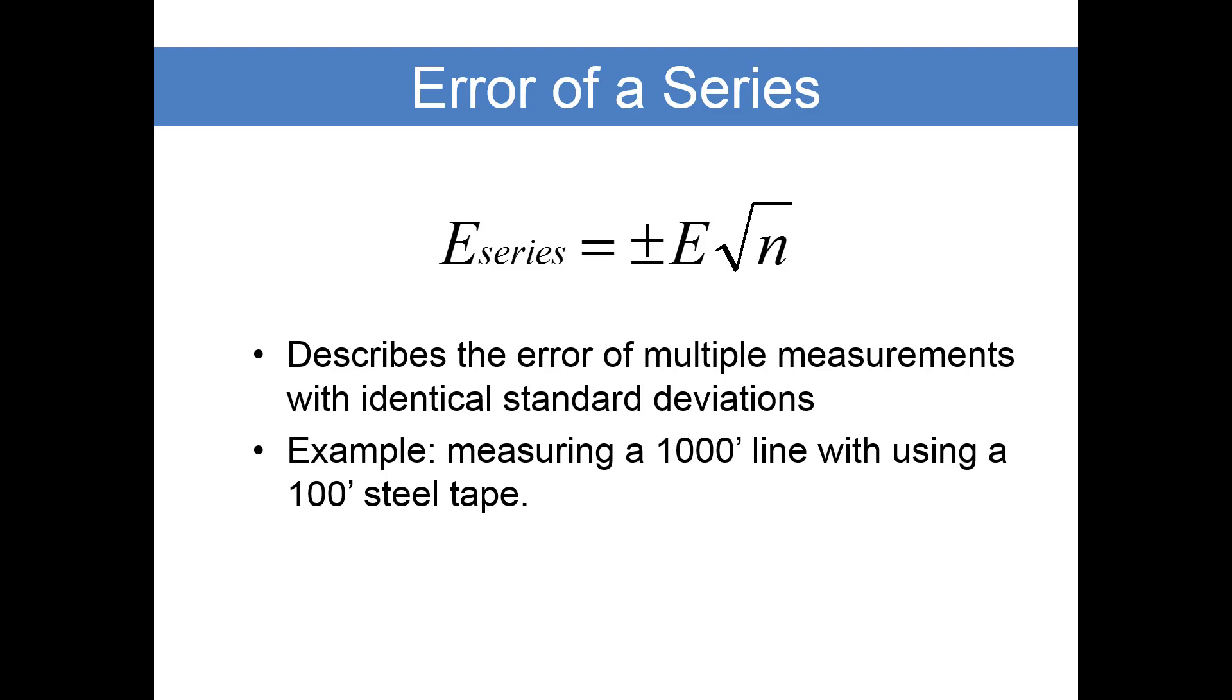Every time you lay down that tape, if you're using good methods, you should have the same error, the same accumulation of error per 100-foot tape length. The error of a series is equal to plus or minus the error times the square root of the number of applications.